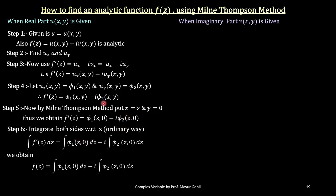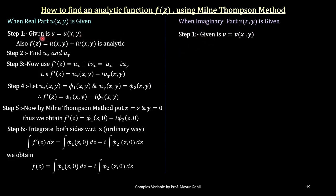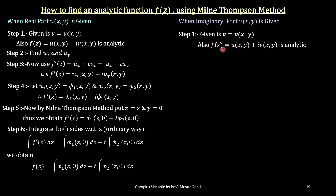Now let us see a similar procedure for the imaginary part. When we are given the imaginary part, how to find the function f(z) which is analytic. Step number one is almost analogous to what we did for the real part — almost the same steps, with a slight change of notation and a slight change in the formula. So step number one: the imaginary part v is given to us. We write the function as f(z) equals u(x, y) plus i·v(x, y), which is an analytic function. Then since the imaginary part v is given, we find the partial derivatives with respect to x and with respect to y.